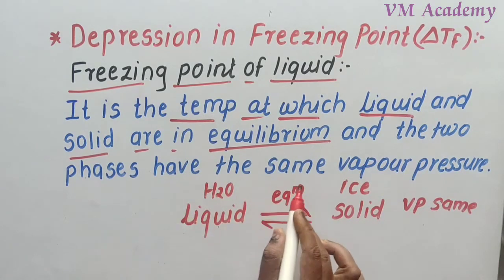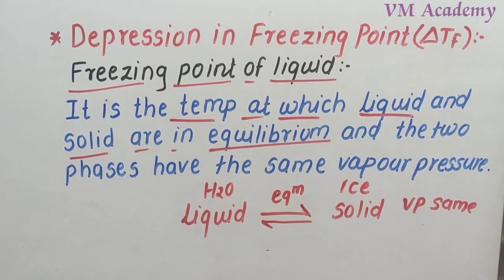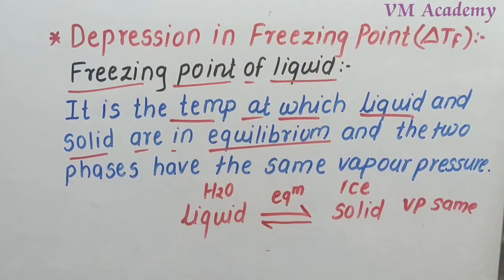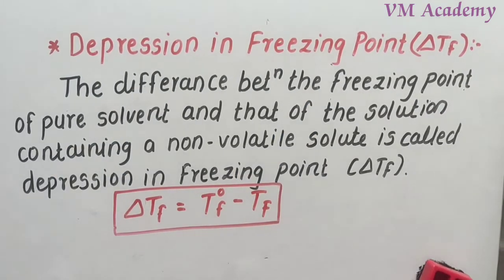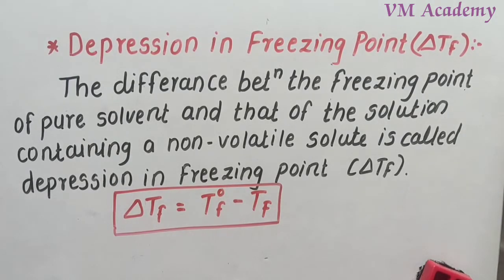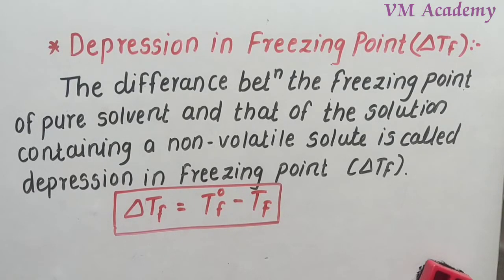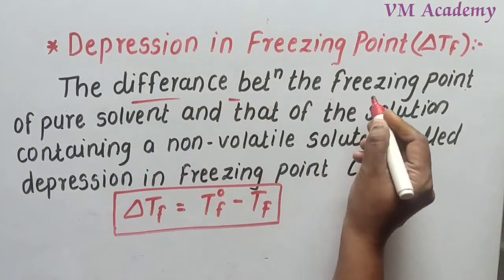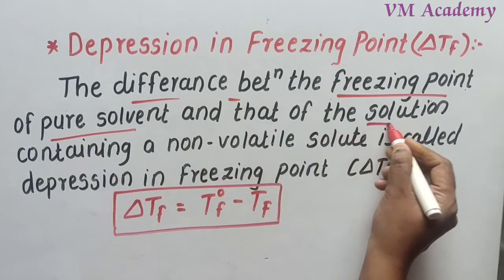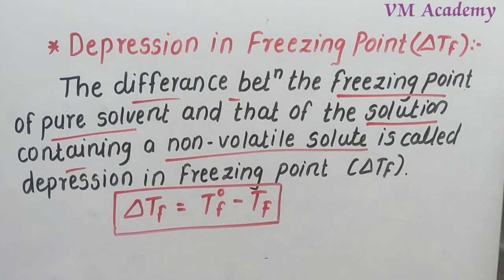The definition: it is the temperature at which liquid and solid are in equilibrium, and these two phases have the same vapor pressure. Both are at equilibrium and both phases have the same vapor pressure. That point is the freezing point of the liquid. So the freezing point of the solvent is higher, and after adding non-volatile solute, the freezing point becomes depressed.